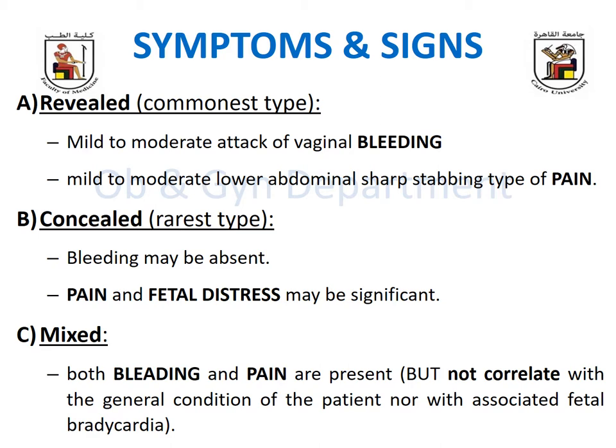In the mixed form there is both bleeding and pain. An important distinction from placenta previa: in placenta previa, the general condition and the external bleeding are proportionate and parallel. But in the mixed type of accidental hemorrhage, the amount of bleeding does not explain the patient's poor general condition, nor the associated fetal distress or bradycardia or fetal death. The trickle of blood does not explain to the obstetrician why the patient is in pain, why she is shocked, or why the baby is distressed — there is a marked discrepancy between the amount of bleeding and the maternal and fetal general condition.